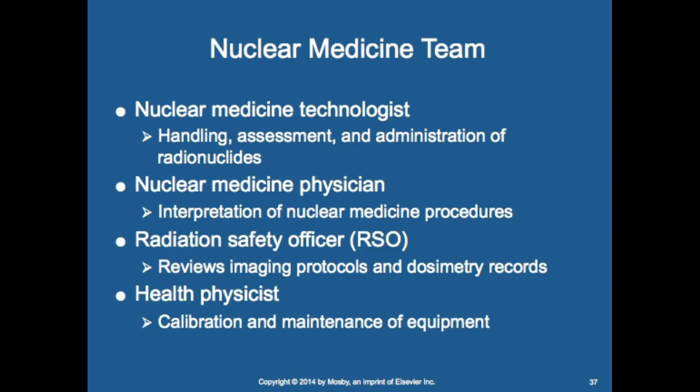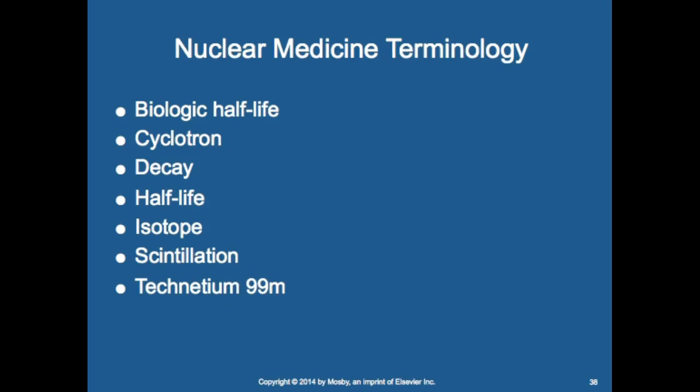The nuclear medicine technologist handles assessment and administration of radionuclides. The nuclear medicine physician interprets the studies. The radiation safety officer reviews imaging protocols and dosimetry reports, and the health physicist calibrates and maintains the equipment. Topics such as biological half-life, cyclotron, decay half-life, isotope, scintillation, and technetium-99 are covered in the textbook.